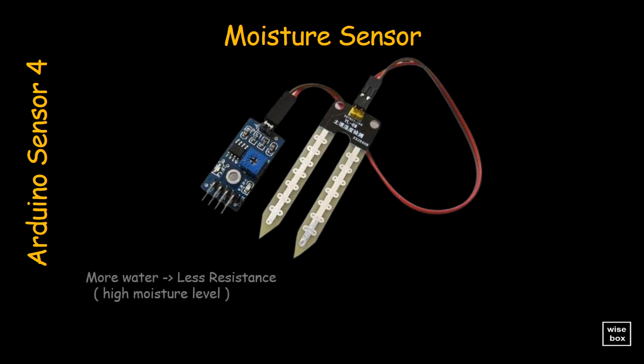When there is more water, the soil conducts more electricity, which means that the resistance will be less. So the moisture level will be higher.